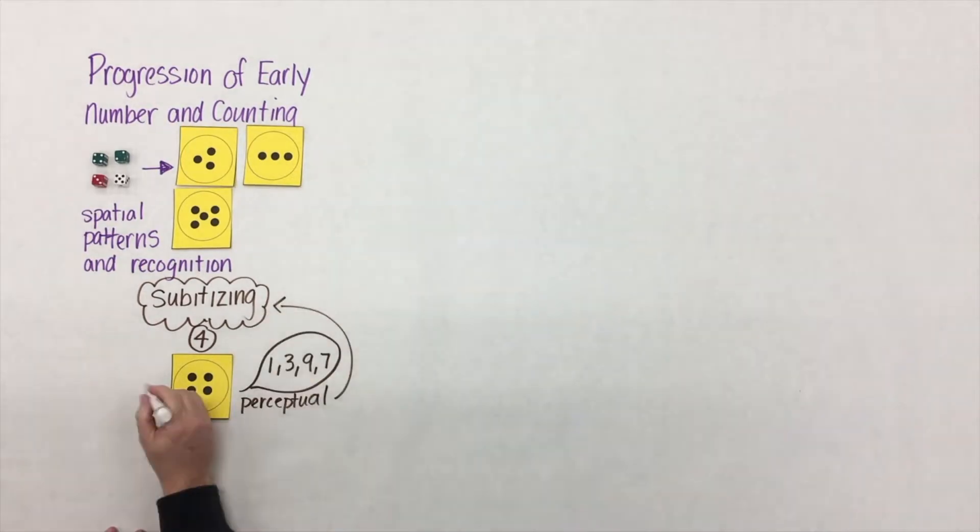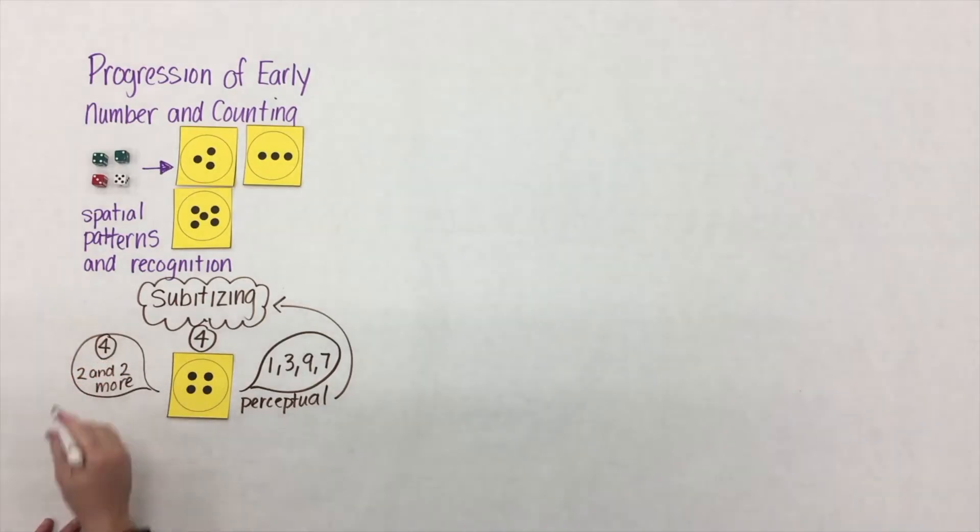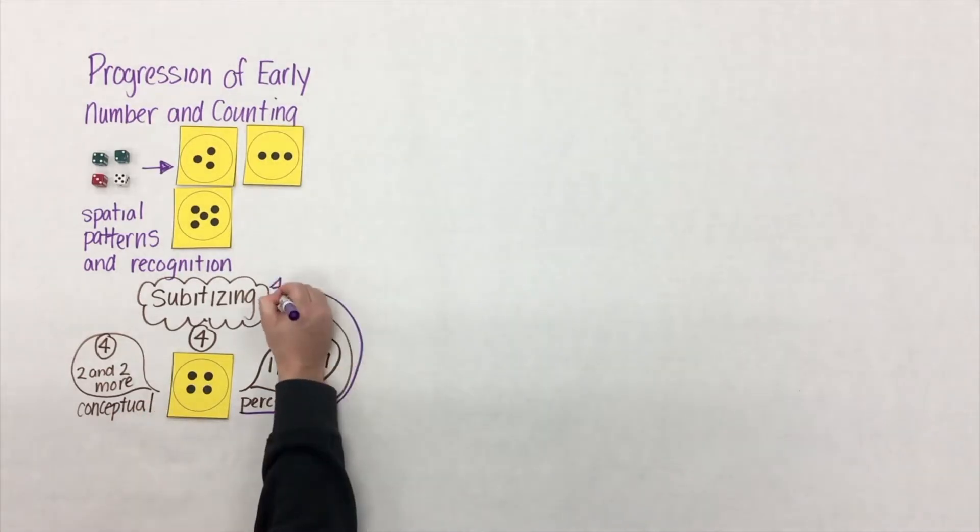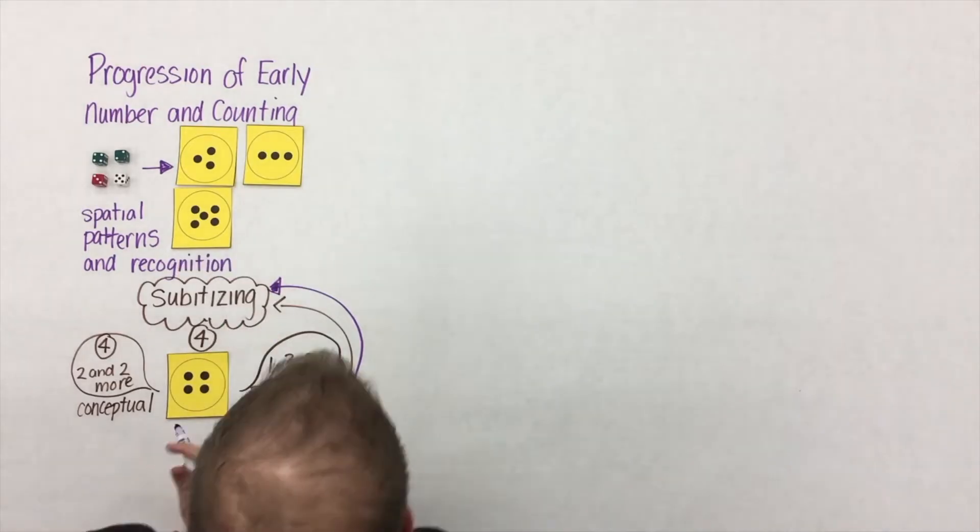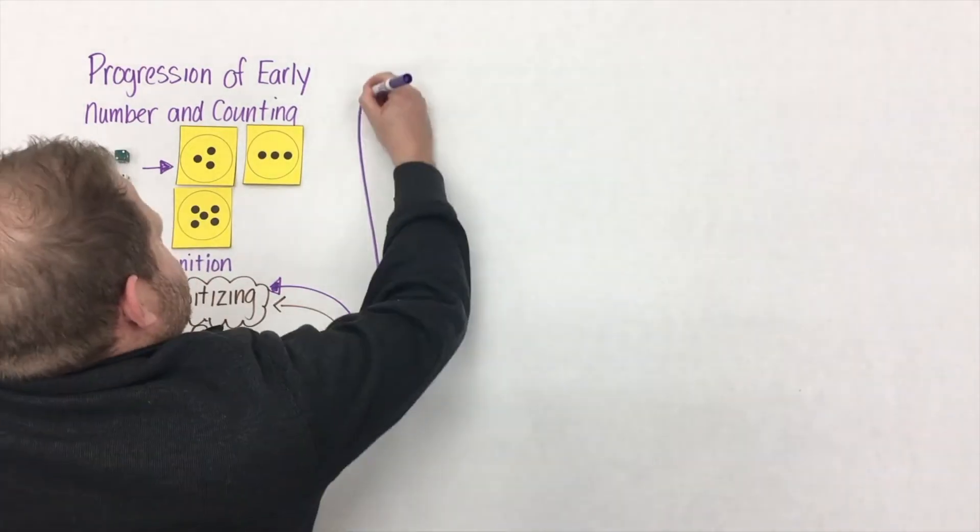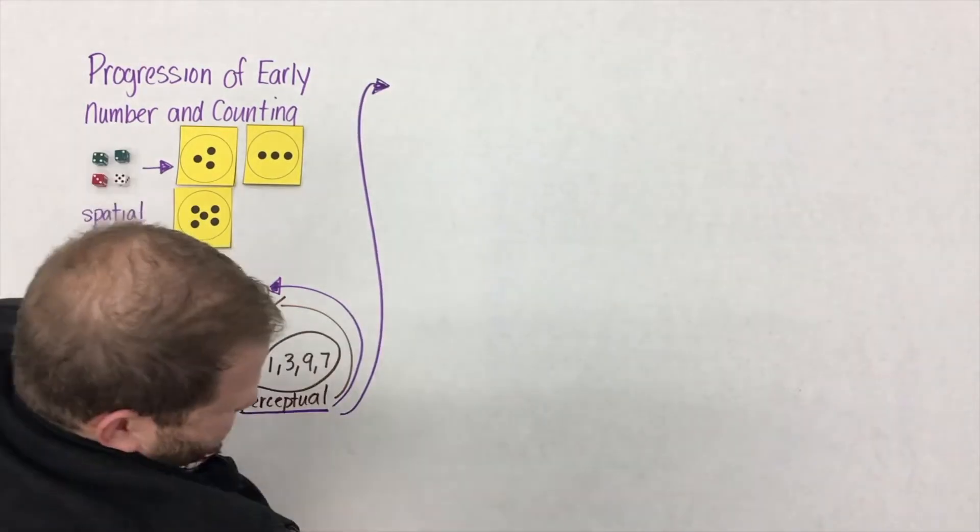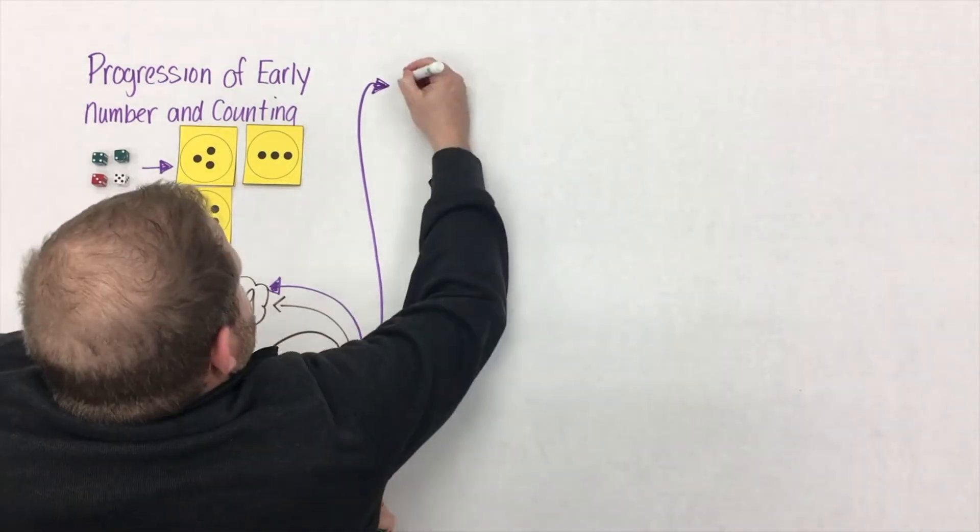they might count them 1, 3, 9, 7. This is a perceptual subitizer. They cannot explain why it's 4. I think most of us are familiar with the conceptual subitizer that would say 4 because there's 2 and 2 more. In this early trajectory, we're talking about a perceptual subitizer.